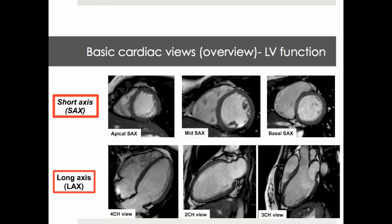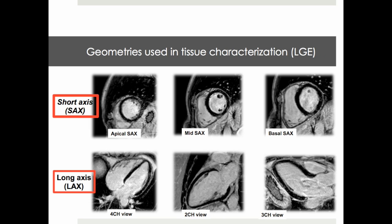This provides an overview of basic cardiac views: short axis slices — apical, mid and basal — as well as long axis views: 4-chamber view, 2-chamber view and 3-chamber view. They are not only useful in cine imaging for assessment of LV function, they also provide geometries used to plan tissue characterization such as SCAR imaging by late gadolinium enhancement.